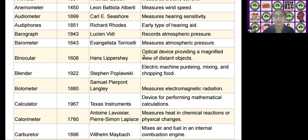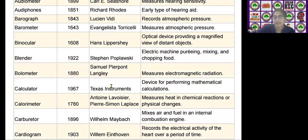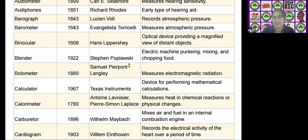The next scientific device is the blender, invented by Stephen Poplowski in the year 1922. It is used as an electrical machine for cutting, mixing, and chopping food.